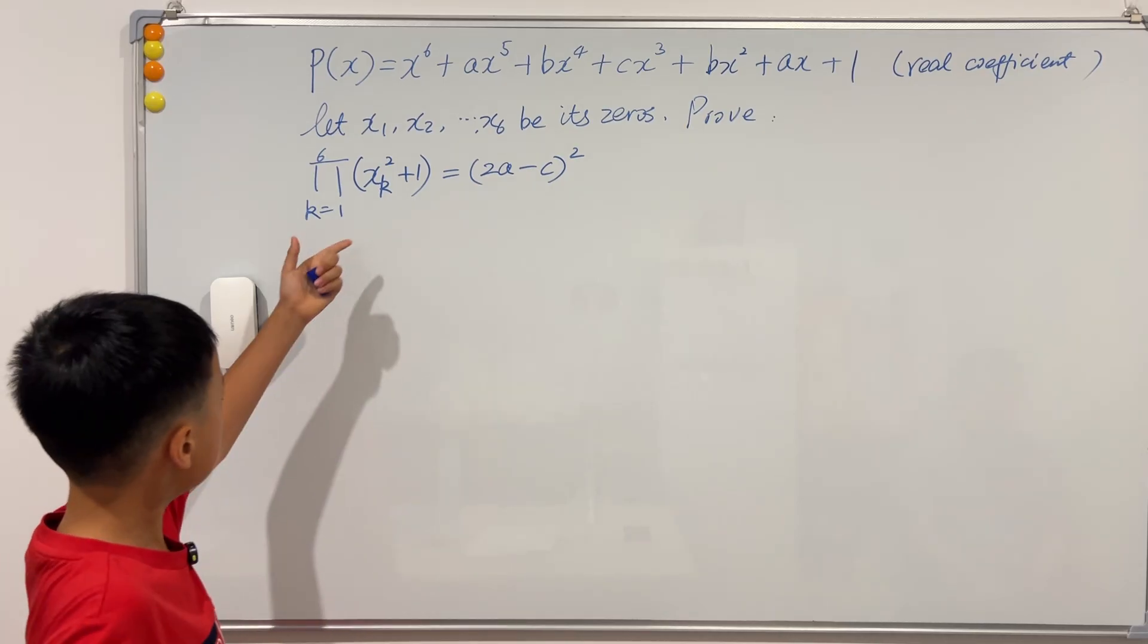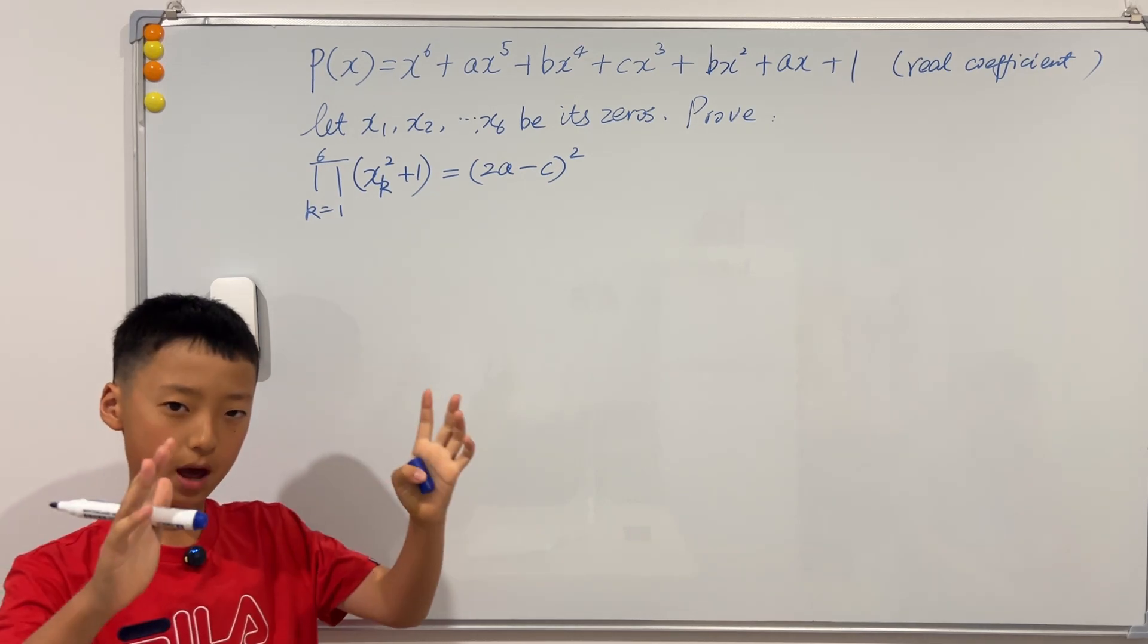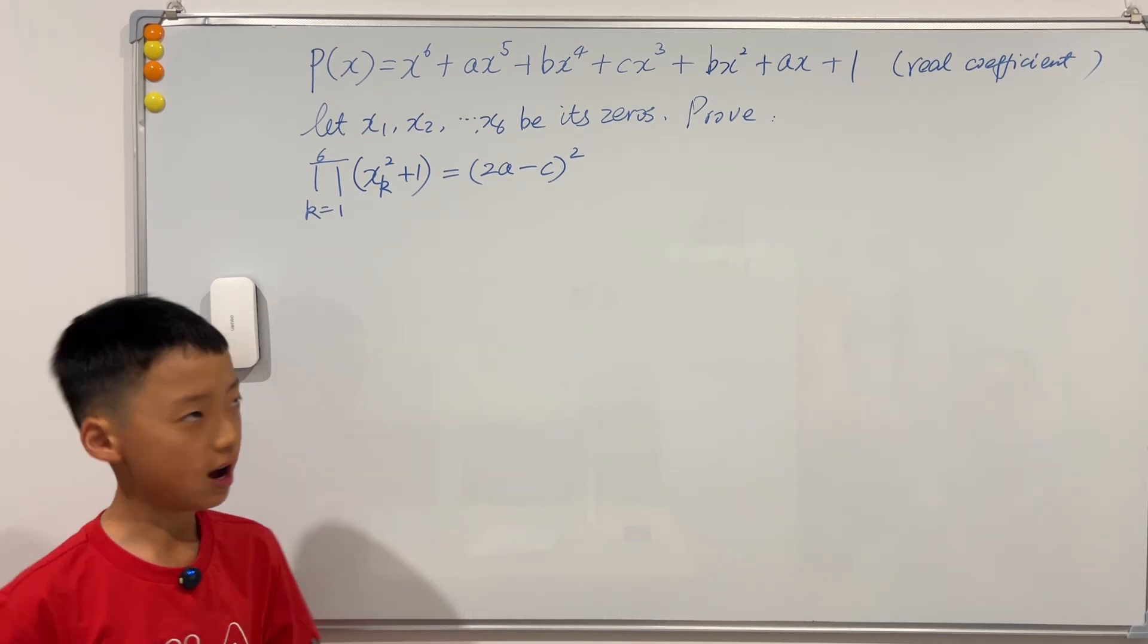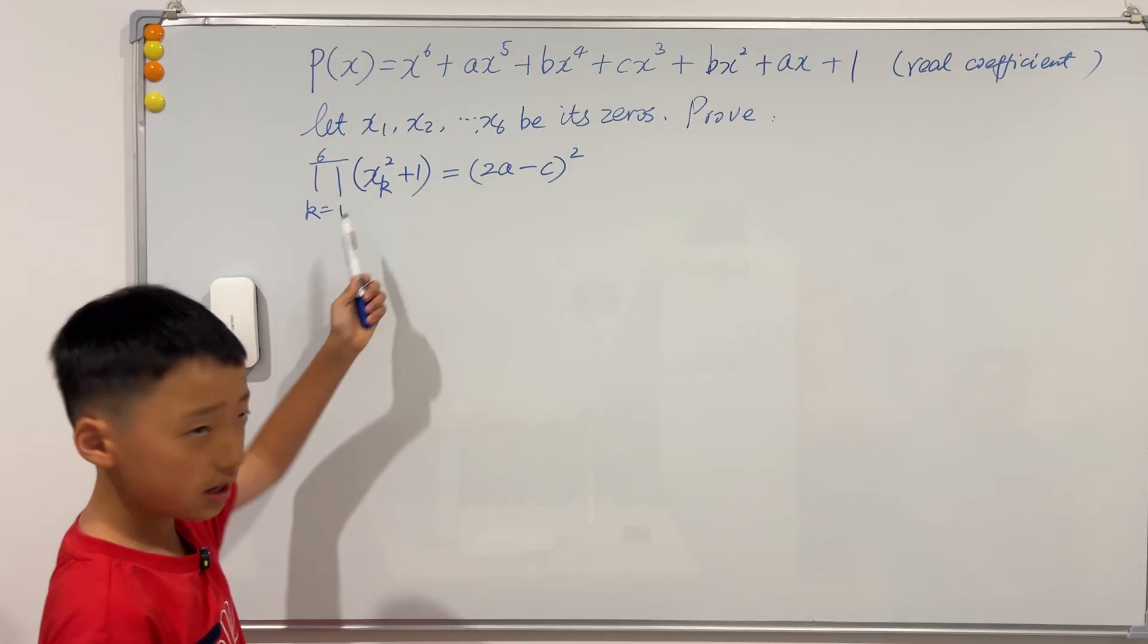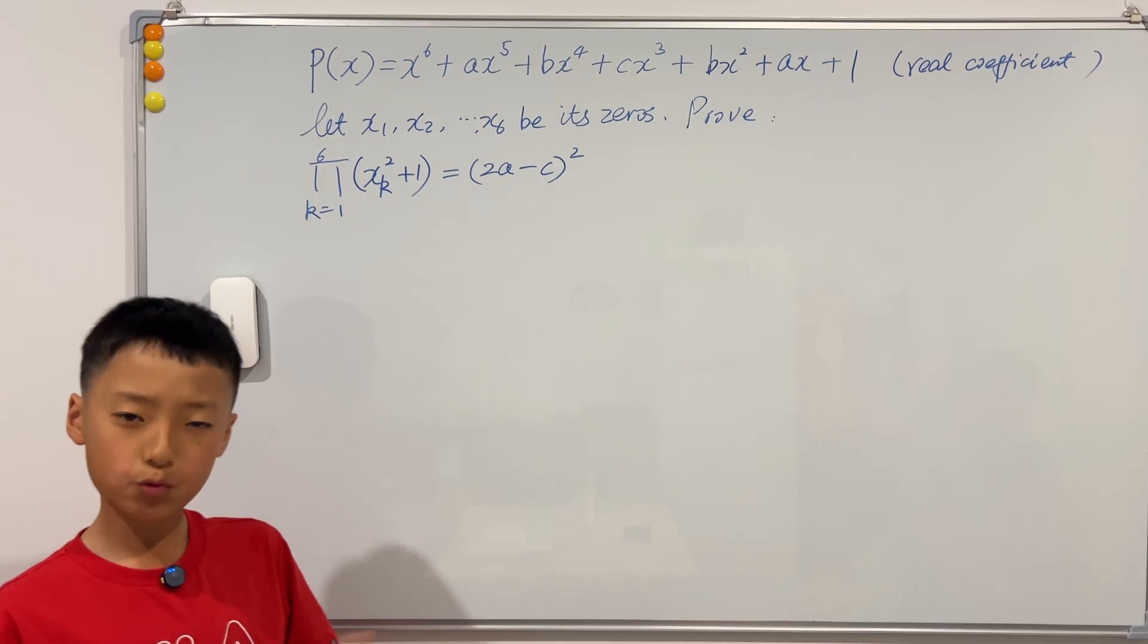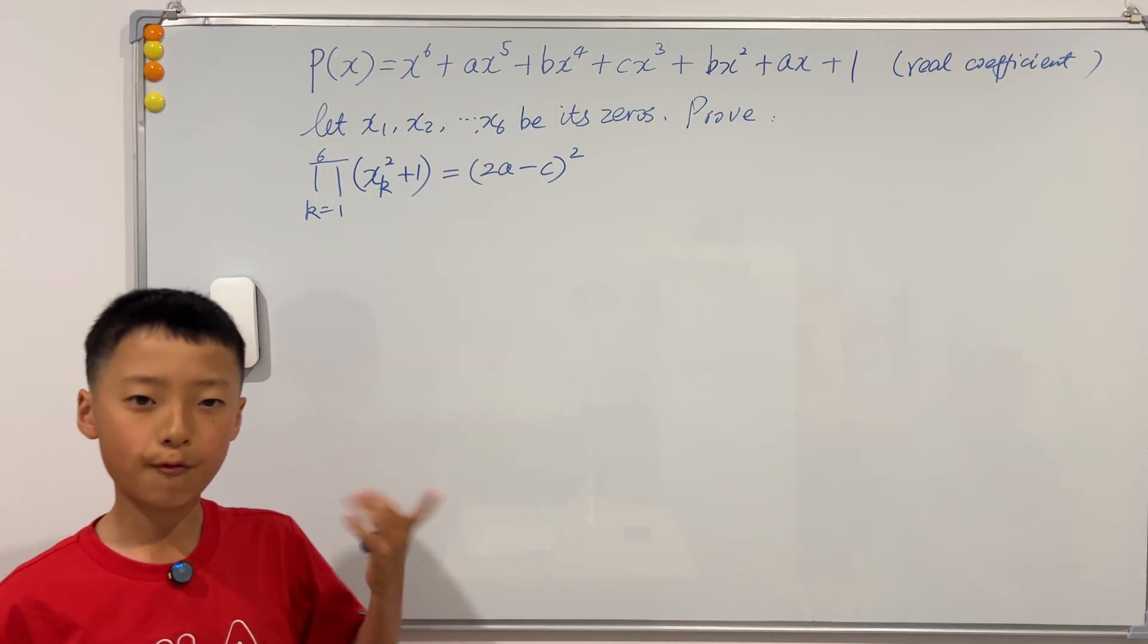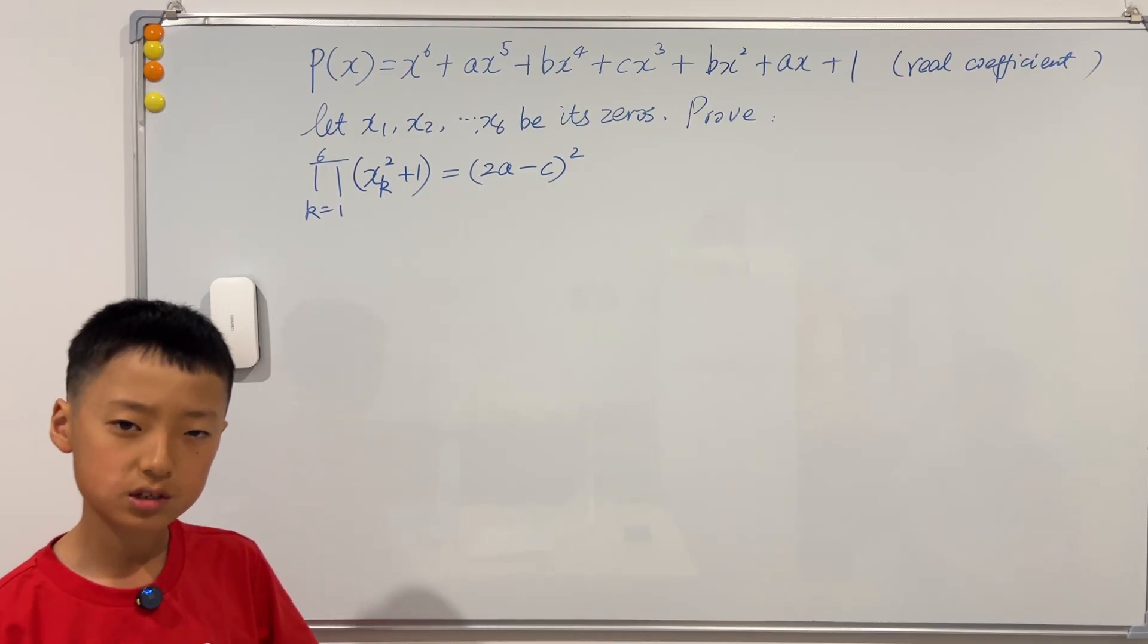So let's look at this. The capital pi means we are multiplying all of these brackets together, but we see that in all of these brackets we have a power of two. But we don't like a power of two, we just like a power of one. So how do we do that?